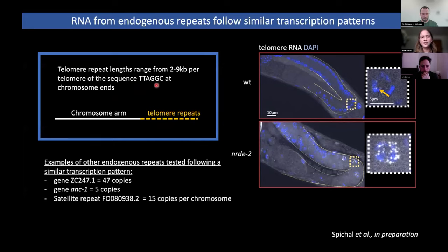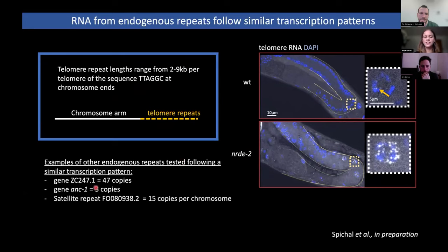Telomere repeats consist of the sequence TTAGGC. By looking at telomere RNA, we could see that it was expressed in the pachytene zone and was also dependent on the NERD2 pathway, indicating that this expression also depended on small RNAs. We found a similar transcription pattern for a gene called ZC247.1, which has 47 copies in the genome, another gene called 1.1 present in 5 copies, and a satellite repeat present in 15 copies per chromosome.